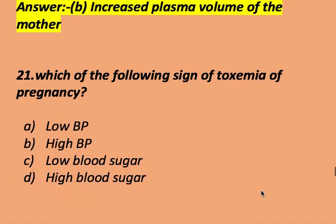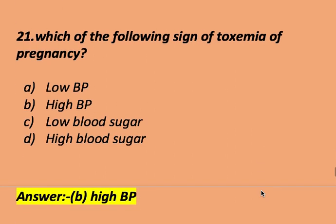Which of the following is a sign of toxemia in pregnancy? Options: low blood pressure, high blood pressure, low blood sugar, or high blood sugar. The right answer is high blood pressure. A sign of toxemia in pregnancy is high blood pressure.